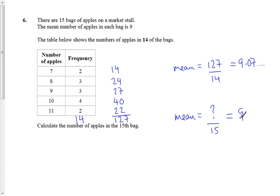Something divided by 15 is equal to 9. So to work out what this something is, we've just got to do 15 times 9, which is 135.